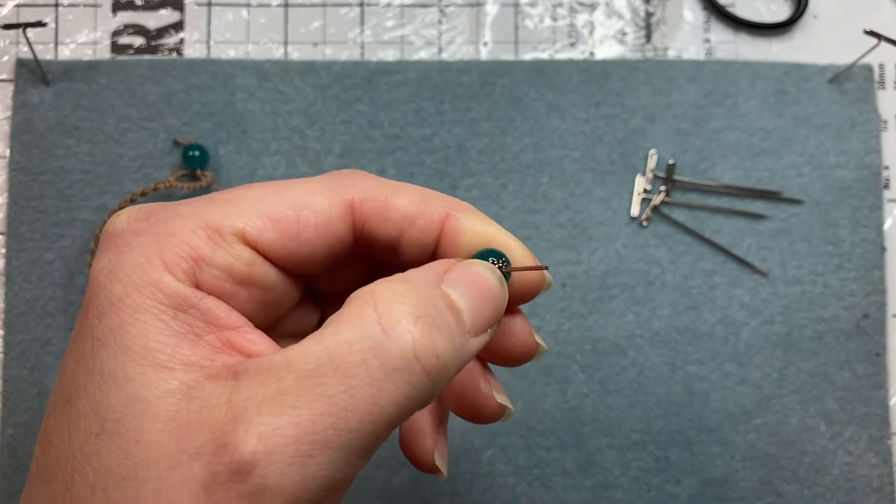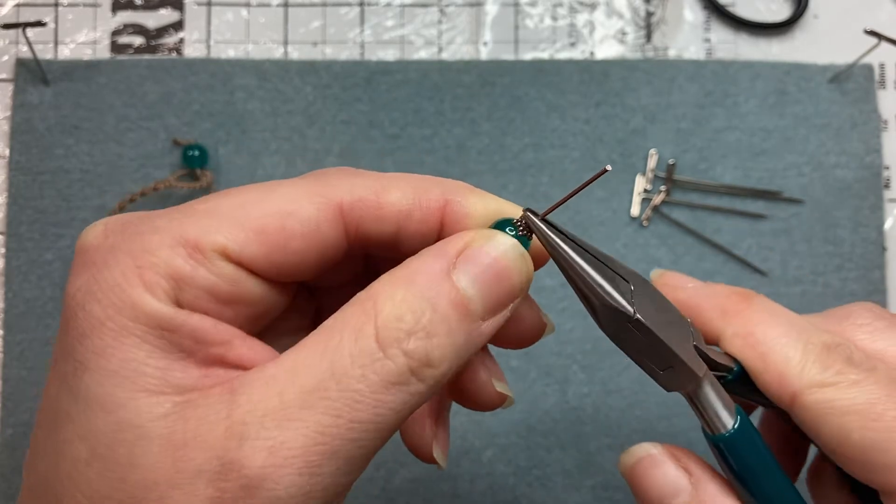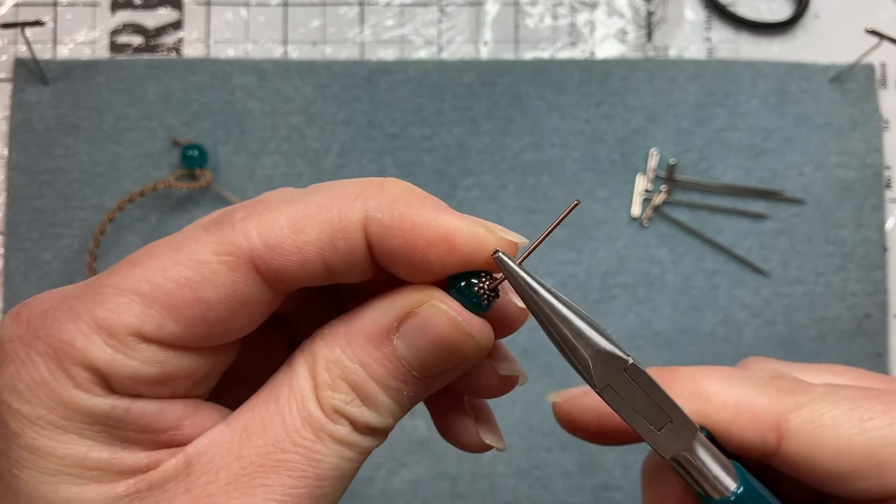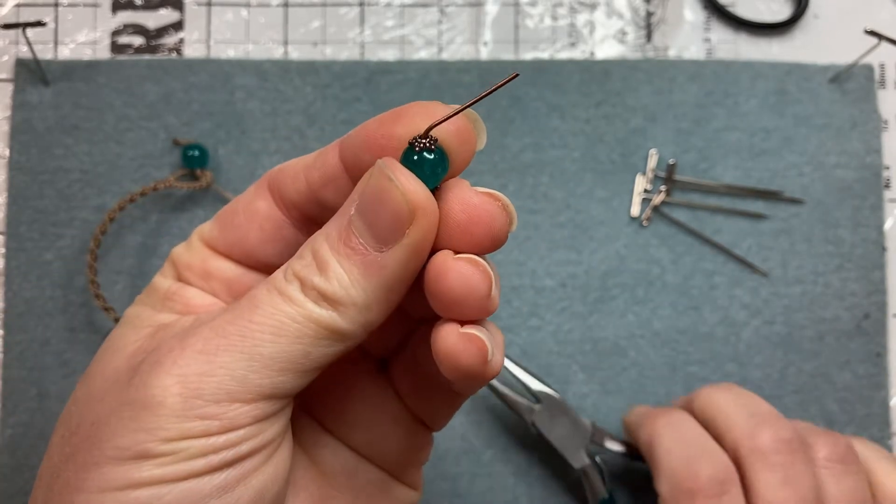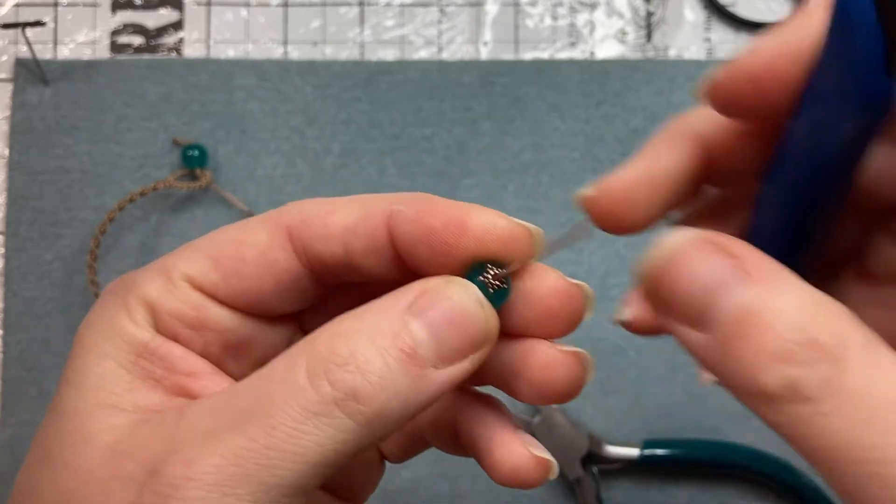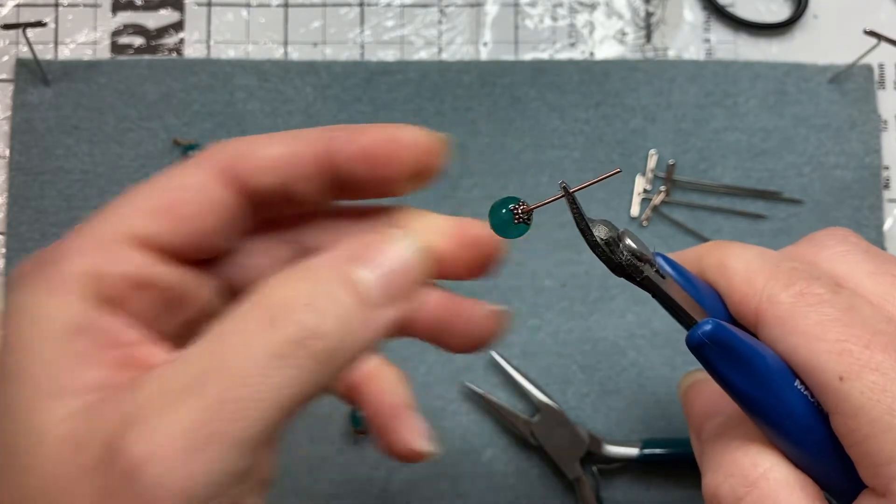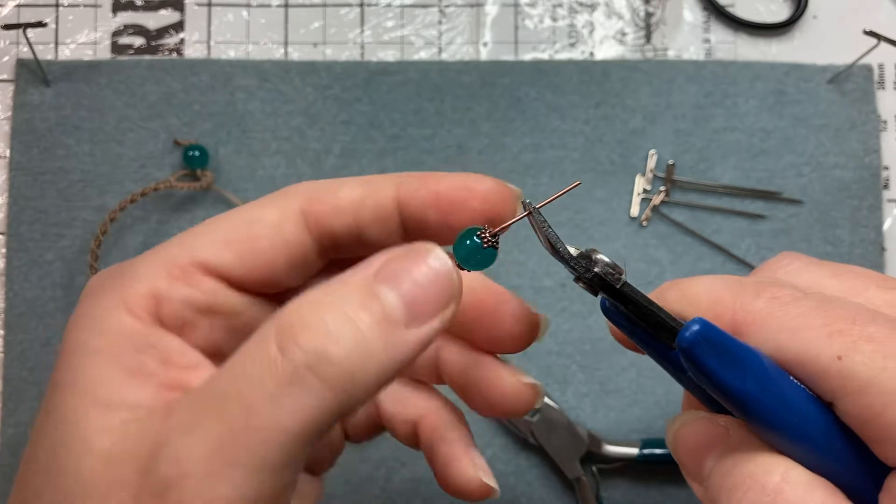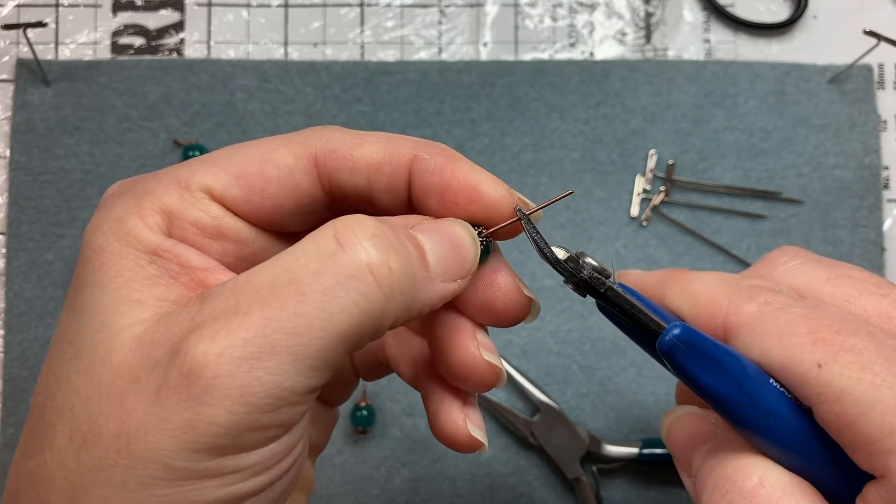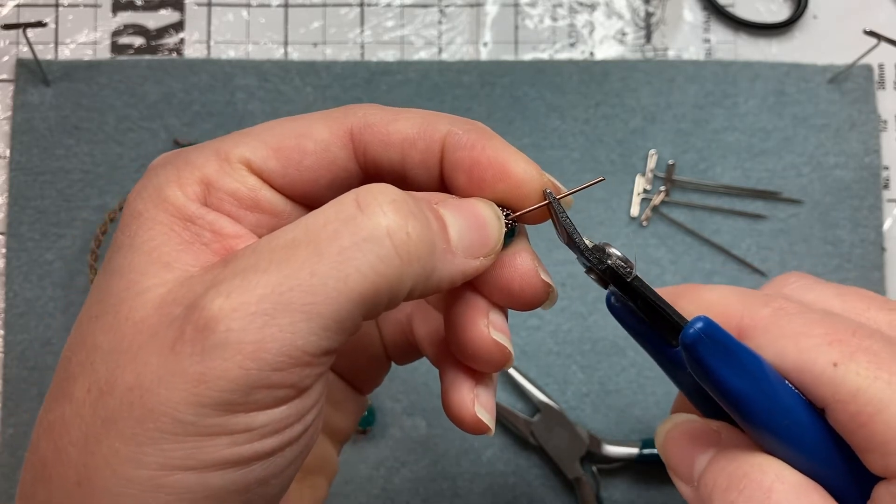We're going to take our chain nose pliers and we're going to bend. You're going to hold it right at the end and you're going to bend that over like so. And then you're going to cut the head pin. Really you're going to have to gauge. You'll get used to it once you do it a couple of times. It's kind of trial and error. I usually leave myself a half an inch or more. Cut it.